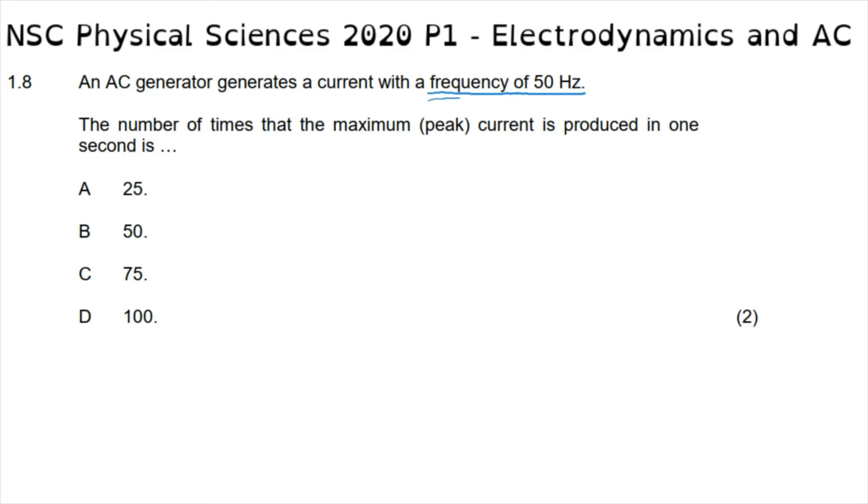What this requires is that we know the definition or have an understanding for what a frequency is. A frequency is the number of complete waves that are produced in one second. So when we see a frequency of 50 hertz, that tells us there are 50 complete waves produced per second. In one wave, the maximum or peak is achieved twice per wave.